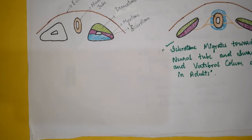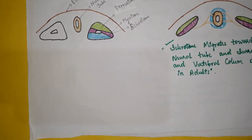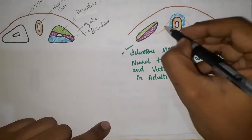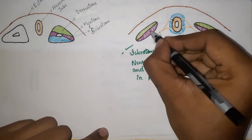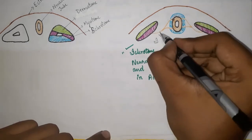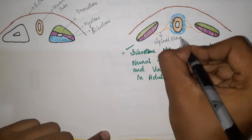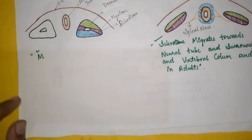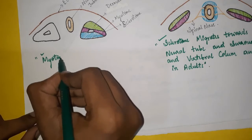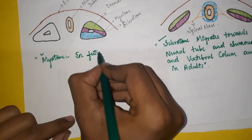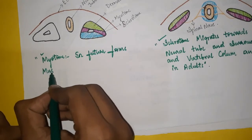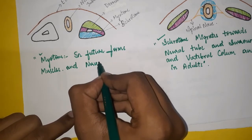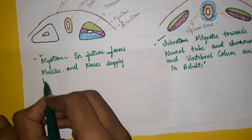Now coming to myotome: myotome is the middle pink region. In future, myotome forms the muscles of the body. The muscles are supplied by spinal nerves, which arise from the neural tube. The neural tube in future forms the brain and spinal cord.